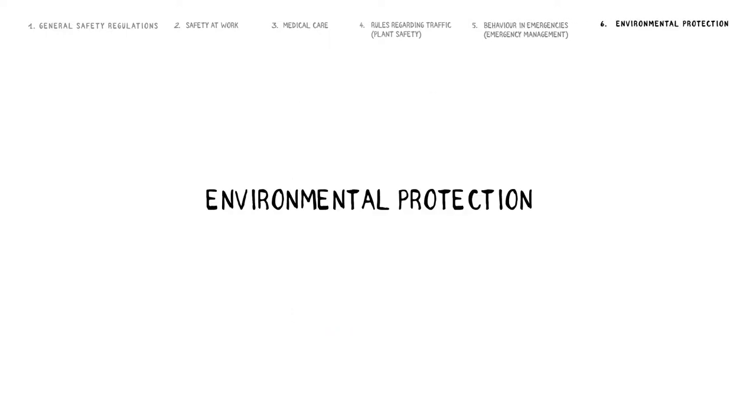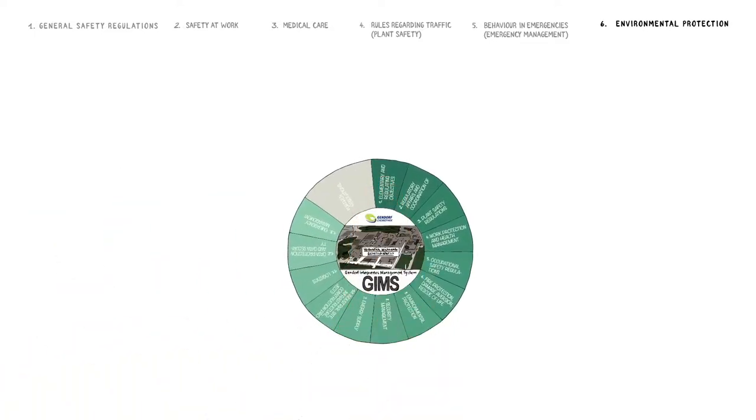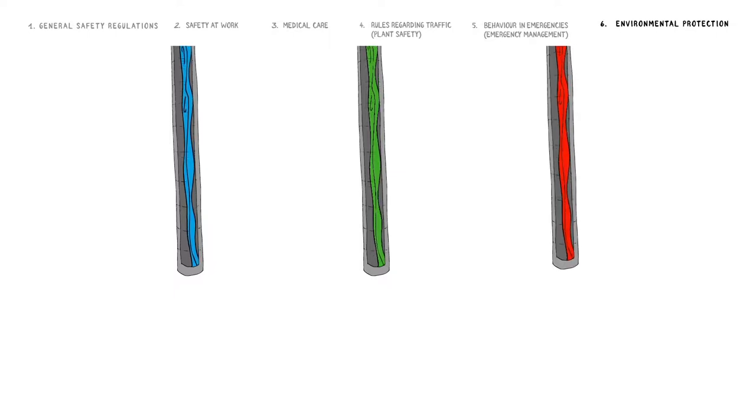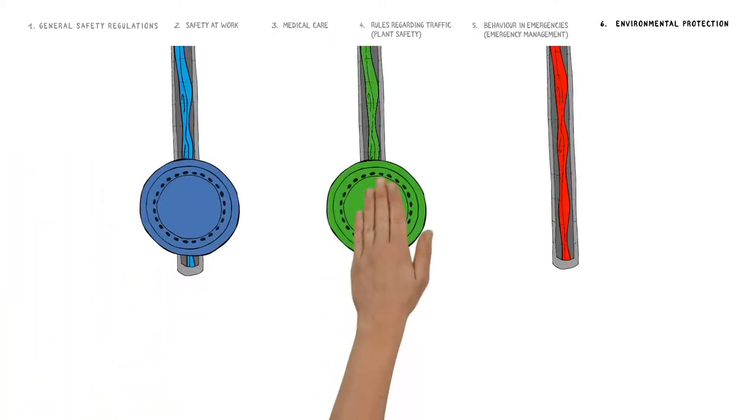Environmental protection is a top priority at the Gendorf Chemical Park. The Environmental Protection Regulations can be obtained from the GEMS. Gendorf Chemical Park has a three-part duct system with three different colors indicating the duct type.